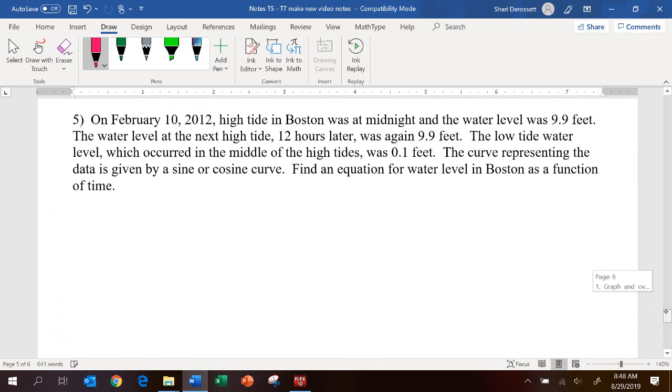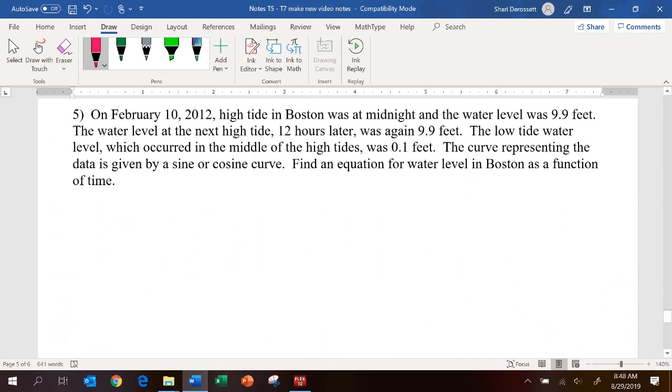And we just want to do this one problem and then we'll be finished. On February 10, 2012, high tide in Boston was at midnight and the water level was 9.9 feet. The water level at the next high tide, 12 hours later, was again 9.9 feet. The low tide water level, which occurred in the middle of the high tides, was 0.1 feet. The curve representing the data is given by a sine or cosine curve. Find an equation for water level in Boston as a function of time.